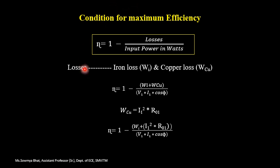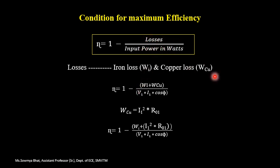Next, I have to determine the condition for maximum efficiency. From the efficiency equation, we know that efficiency equals 1 minus losses divided by input power. There are mainly two types of losses in transformers: one is called iron loss (also called core loss or constant loss), and the other is copper loss (also called variable loss). So losses include both iron loss and copper loss.